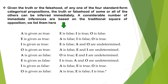Similarly, if E is true: A is false because of the contrary relation — both cannot be true. O is true because E is the superaltern and O is the subaltern. And I is false because of the contradictory relation between E and I.